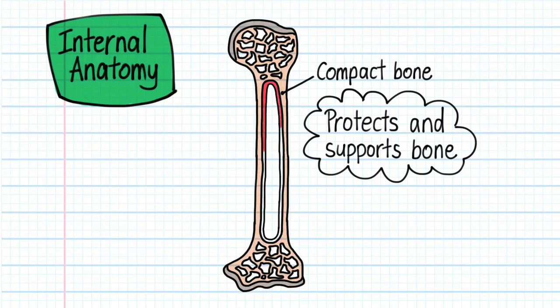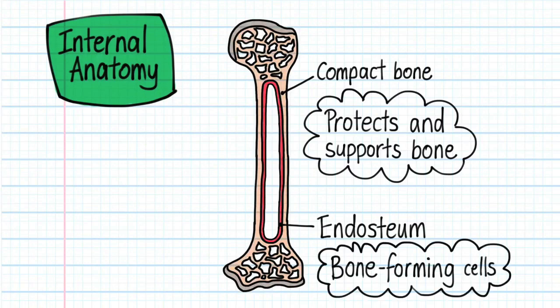Lining the inside of the compact bone is a thin membrane called the endosteum. It contains bone forming cells as well as some connective tissue.